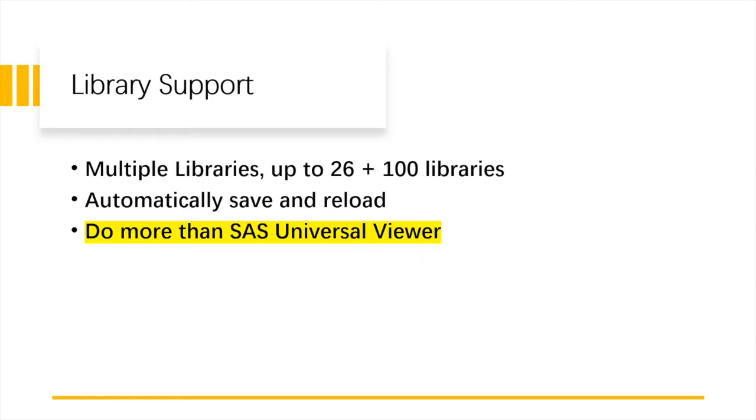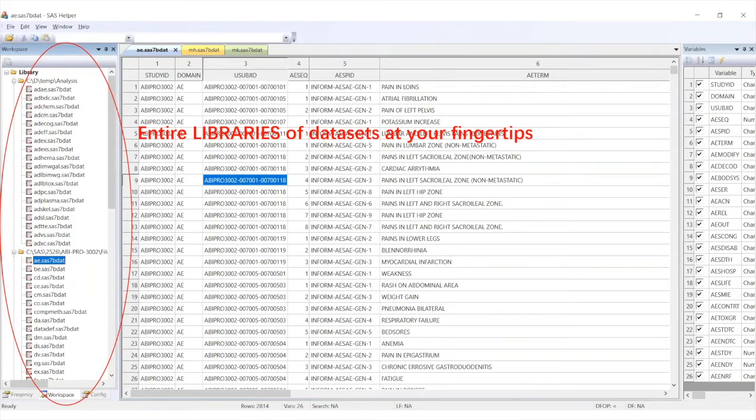Let's talk about the library support. Currently, this tool supports 126 libraries. For the first version released in Johnson & Johnson, the beta version, we only supported 26 libraries. But some SAS Helper heavy users asked for more. So now this tool supports 126 libraries. All these libraries will be automatically saved when you close SAS Helper, and all of them will be reloaded when you open it next time. For this feature, we think we do more than SAS Universal Viewer. At the left side, you can see there's one workspace and two libraries are shown here.